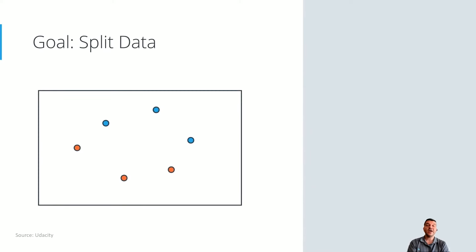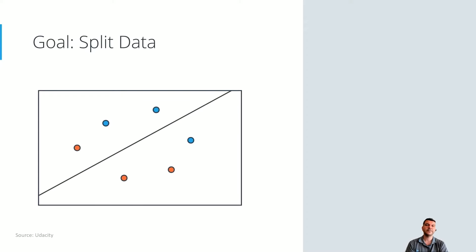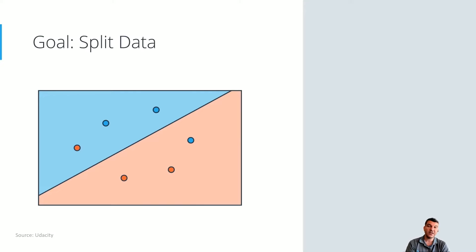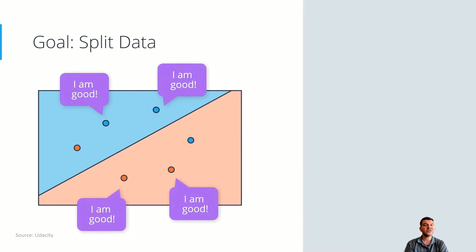Let's say we have six points — three blue and three red. The machine doesn't really know where to start from, so it could start with a random line. This line will separate our dataset in two halves, the blue and the red half. By looking at the screen, we can easily spot that we have four points which are classified correctly, but we also have two points that are misclassified.